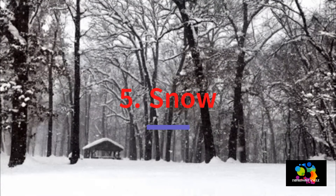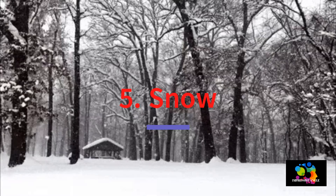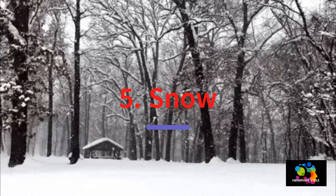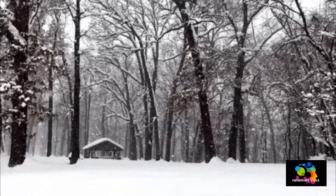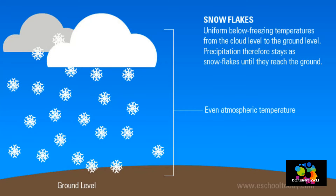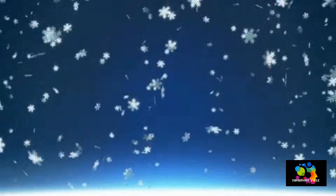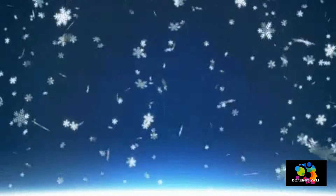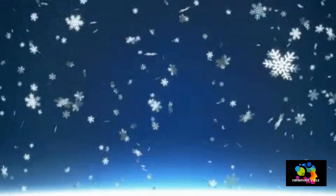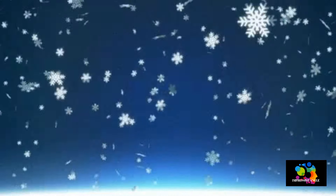Now coming to the end, let us see how snowfall occurs. As we know, snowflakes are already produced up in the clouds and then the atmosphere in the entire column is below freezing point. That means the snow never melts and down here at the surface we end up with snowfall.